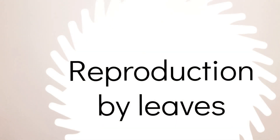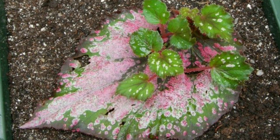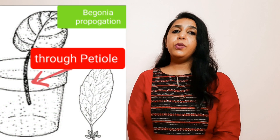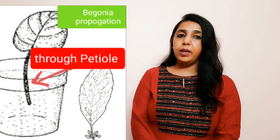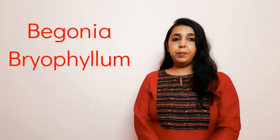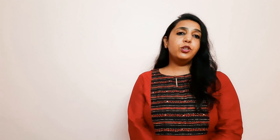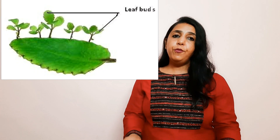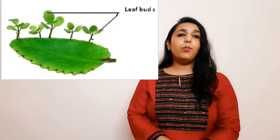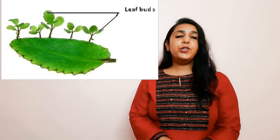Next is reproduction by leaves. There are many plants which can actually be reproduced through leaves only. Plants like begonias and bryophyllum have buds on the margin of their leaves, which when they fall down on moist soil have chances to grow into a new plant.